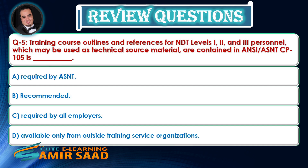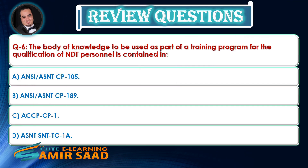Question 5: Training course outlines for NDT Levels 1, 2, and 3 personnel, which may be used as technical resource material, are contained in ANSI/ASNT CP-105 — Answer is B. Question 6: The body of knowledge to be used as part of a training program for the qualification of NDT personnel is contained in — Answer is A.